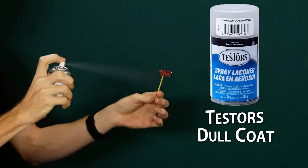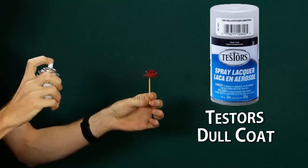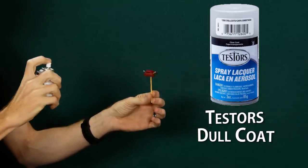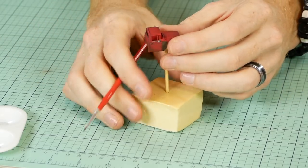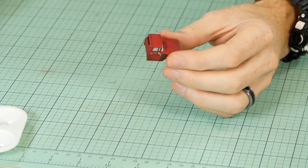Once you're happy, apply a layer of dull coat over the entire model. But make sure you're happy, because once the dull coat has been applied everything below it can't easily be removed without stripping the entire model and starting from scratch.